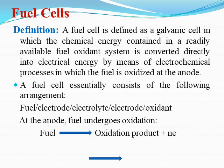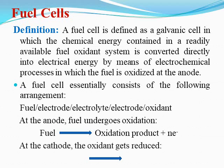The fuel undergoes oxidation at the anode, giving rise to an oxidation product and liberating n moles of electrons. The energy liberated is converted into electrical energy. From one end the fuel is continuously supplied, and from the other end the electrical energy as well as the products of combustion — carbon dioxide and water — are taken out. At the cathode, the oxygen gets reduced.